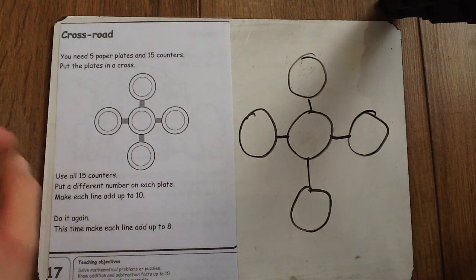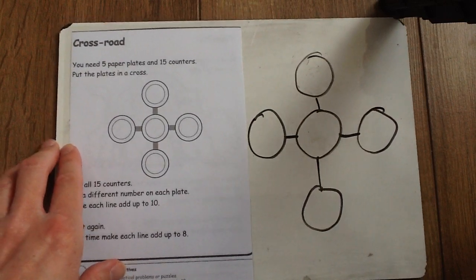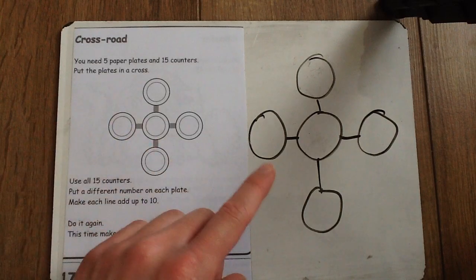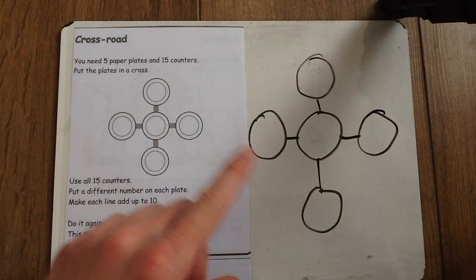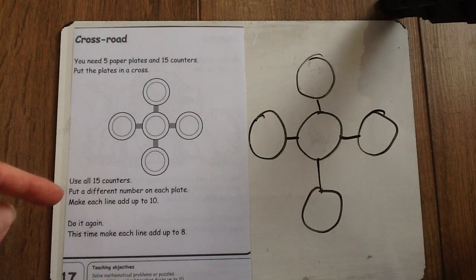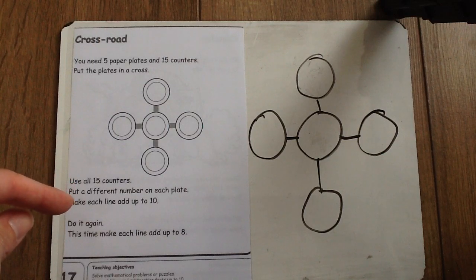Hello and welcome to this week's Maths Challenge, the final Maths Challenge I'm afraid. For Years 1 and 2 it was called Cross Road and you had 5 plates or 5 circles, 15 counters and you were trying to match the counters into the circles but following the rules.